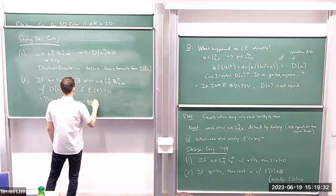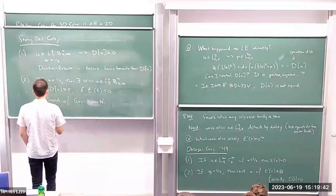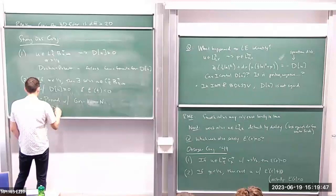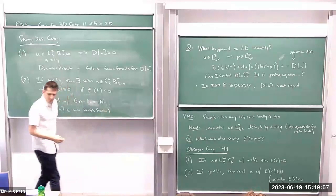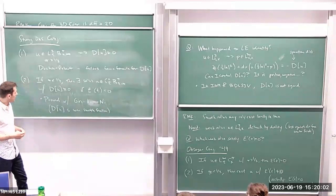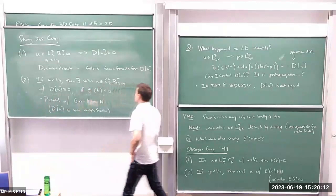Regarding the prescribed dissipation measure: for us, D(u) is some smooth function that we specify. We didn't verify that you can prescribe any smooth function, but we at least gave some examples of positive functions for which you have a weak solution satisfying this condition.